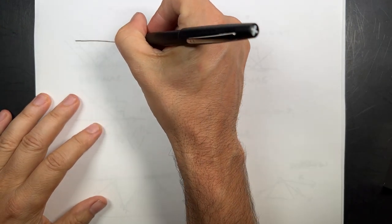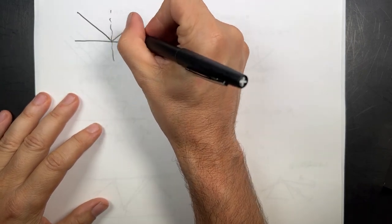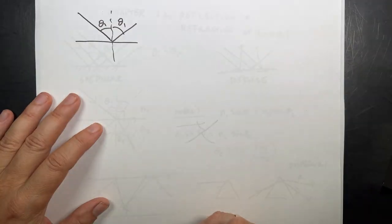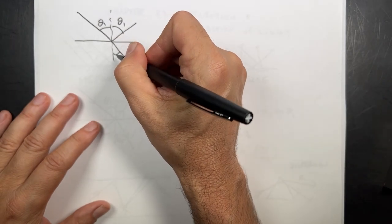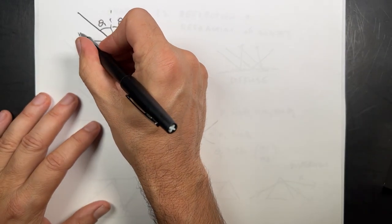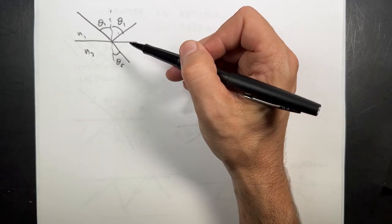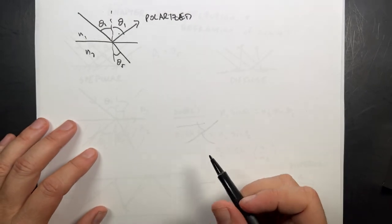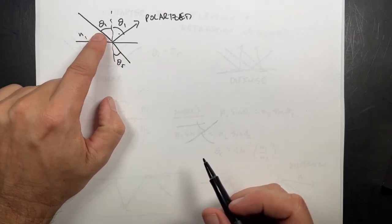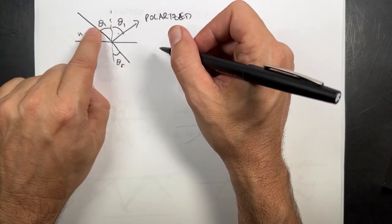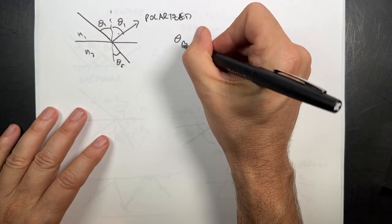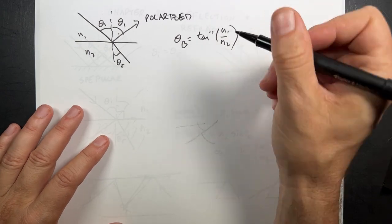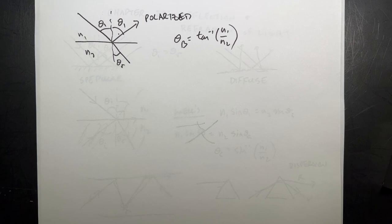Brewster's angle. We talked about polarized light. It turns out that when light comes down and reflects, we have theta_i and the angle of reflection is the same, and then theta_r refracted. When this angle equals that angle, something magic happens — this reflected light becomes polarized. The angle at which this happens is called Brewster's angle. The Brewster's angle is the inverse tangent of n1 over n2. It's kind of cool that polarized light comes from reflected stuff, and that's why you have polarized sunglasses — they block that glare off of certain surfaces.